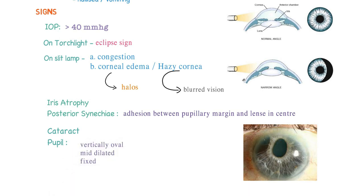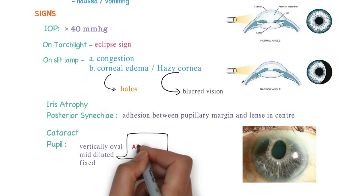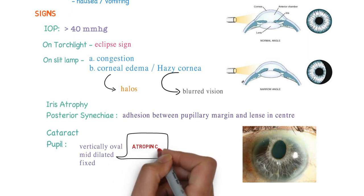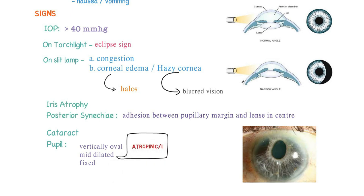Should we give atropine to this patient? Obviously no. Why? Because the pupils are already mildly dilated. Atropine is contraindicated in this condition — remember that atropine is contraindicated.